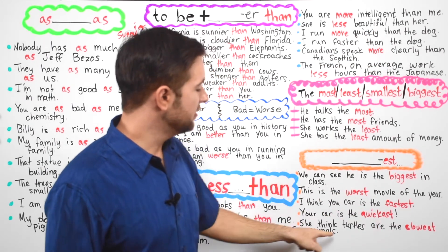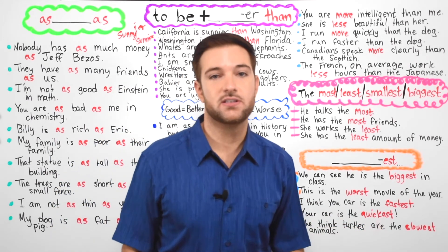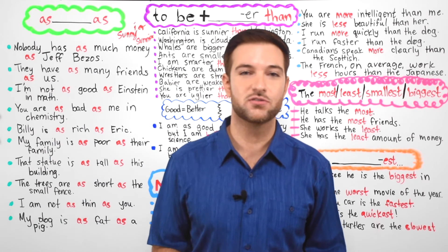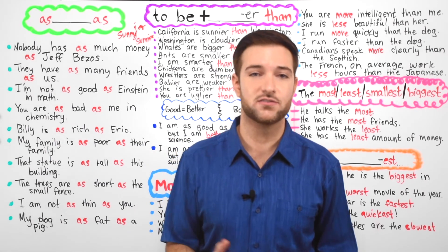And finally, she thinks turtles are the slowest animals. Meaning they're very slow. Nothing is as slow as a turtle. All the other animals are faster.